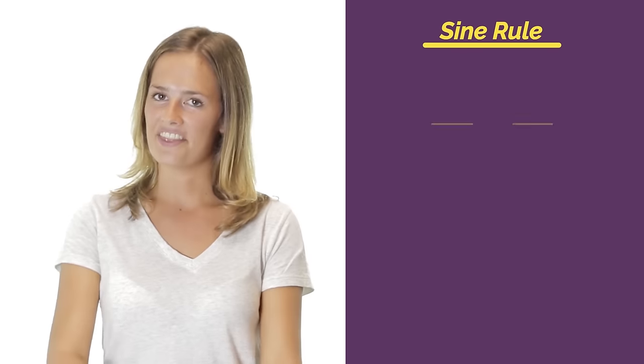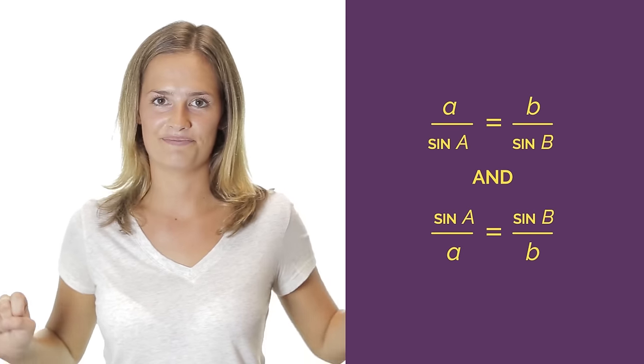But the sine rule doesn't always work. We need a plan B, and that is the cosine rule.